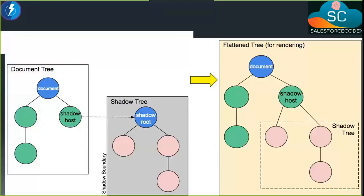If we look at the structure of our page, in the first box we have a document tree — we can see the tree structure has normal elements as well as a Shadow DOM element. Whenever we inject our element as a Shadow DOM, first a Shadow DOM host is created. And similar to our document tree, a Shadow DOM tree is also created. So you can see there are two DOM trees in parallel.